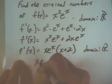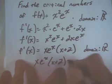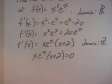We've got x times e^x times (x + 2), and we'll set it equal to zero. And any solution to this equation will be a critical number of f.